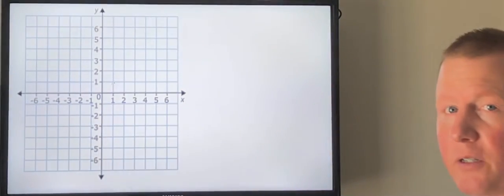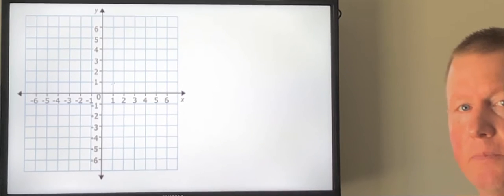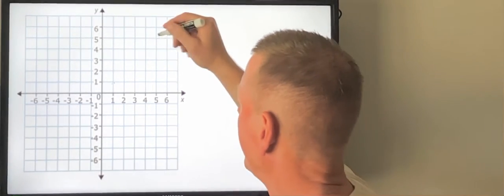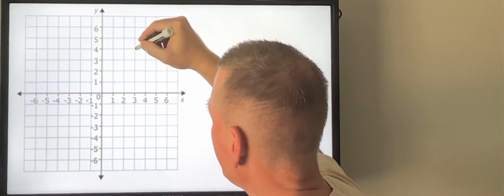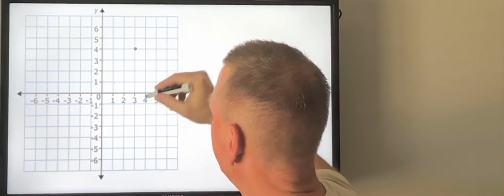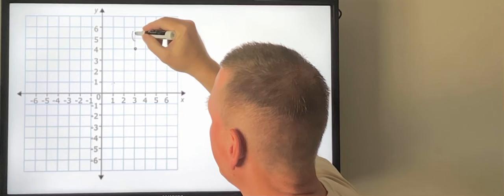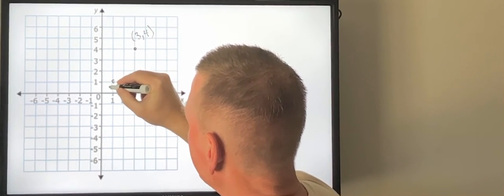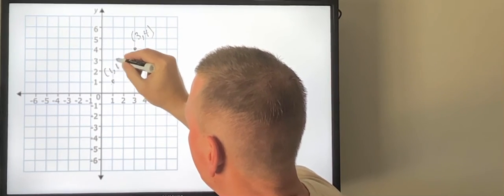So let's take a look back at our Cartesian plane here. If I have two points on the graph, let's say we'll go with this point here which would be the point (3,4) and this point here which is the point (1,1).